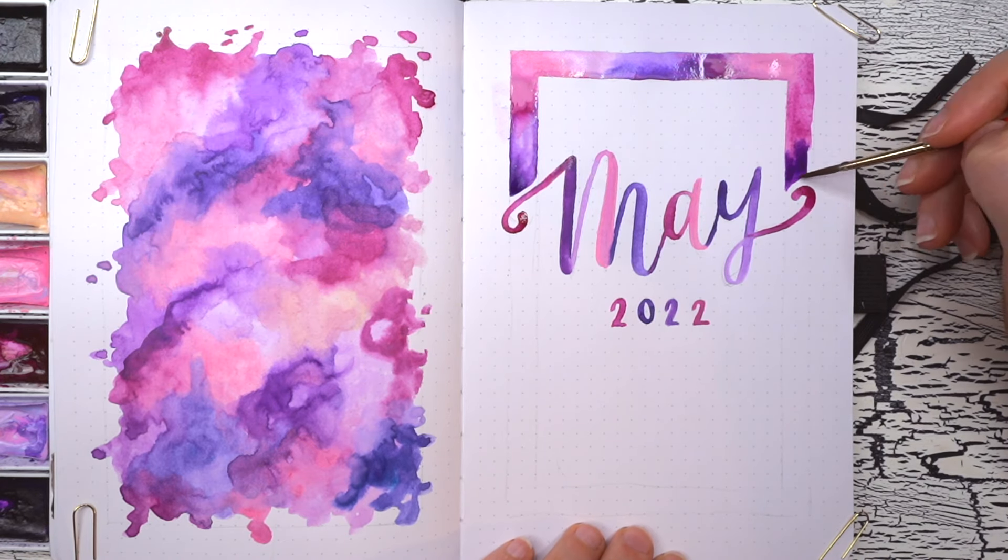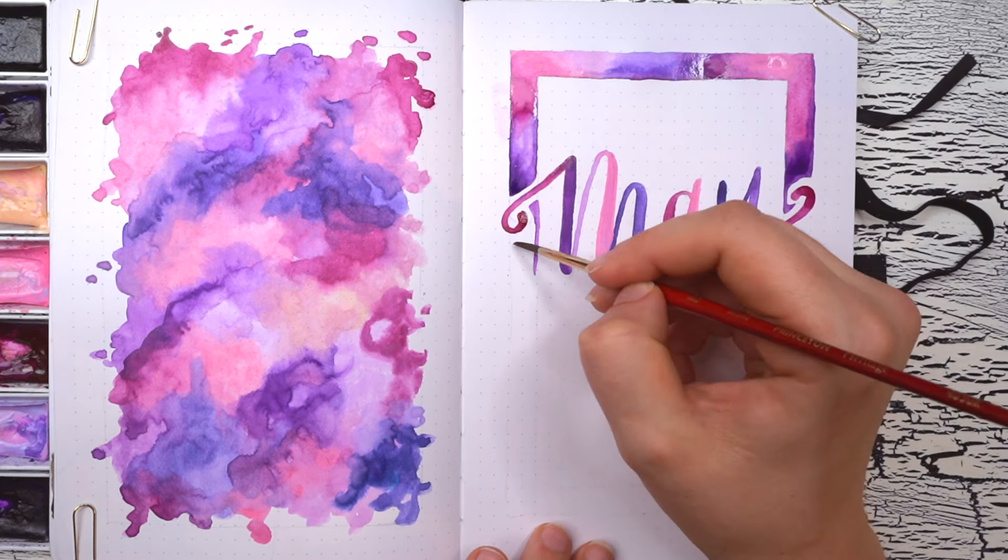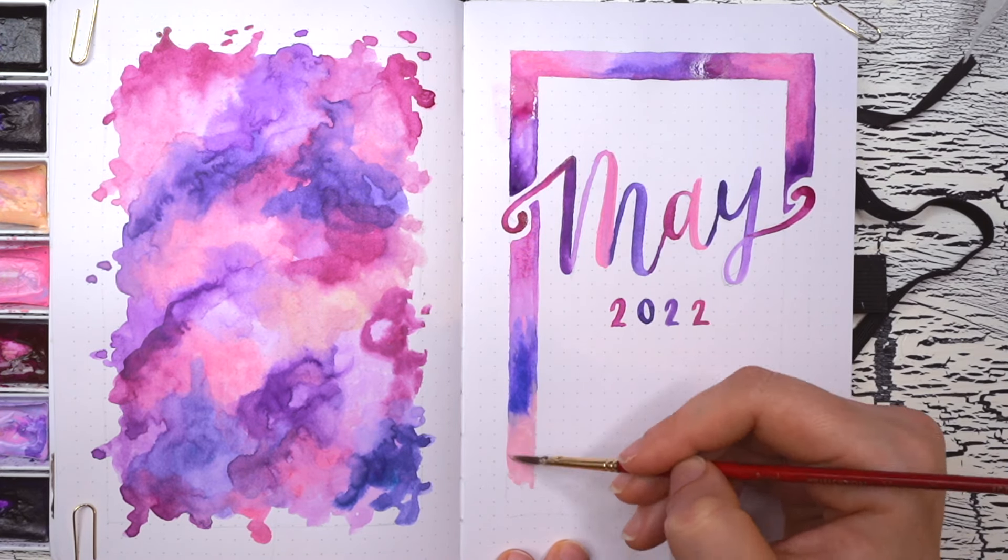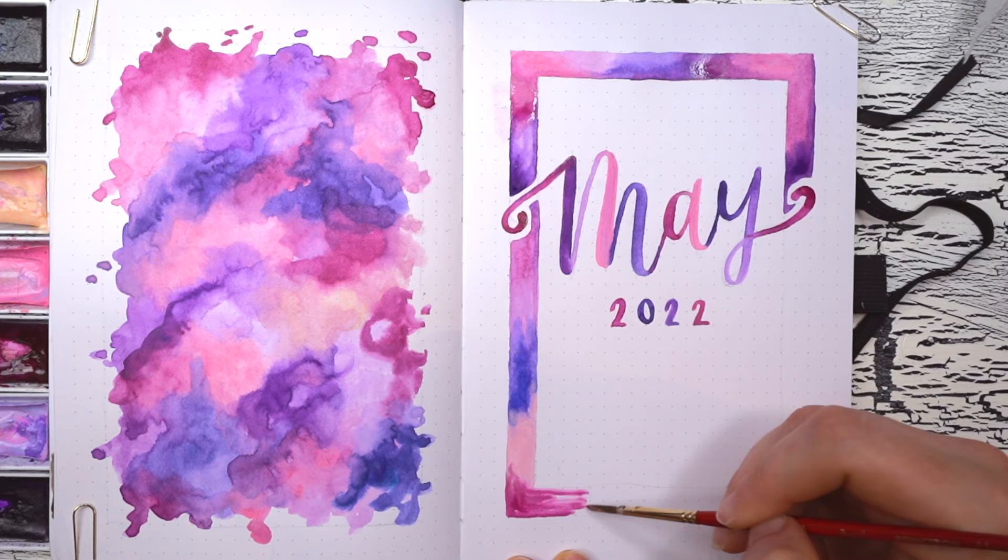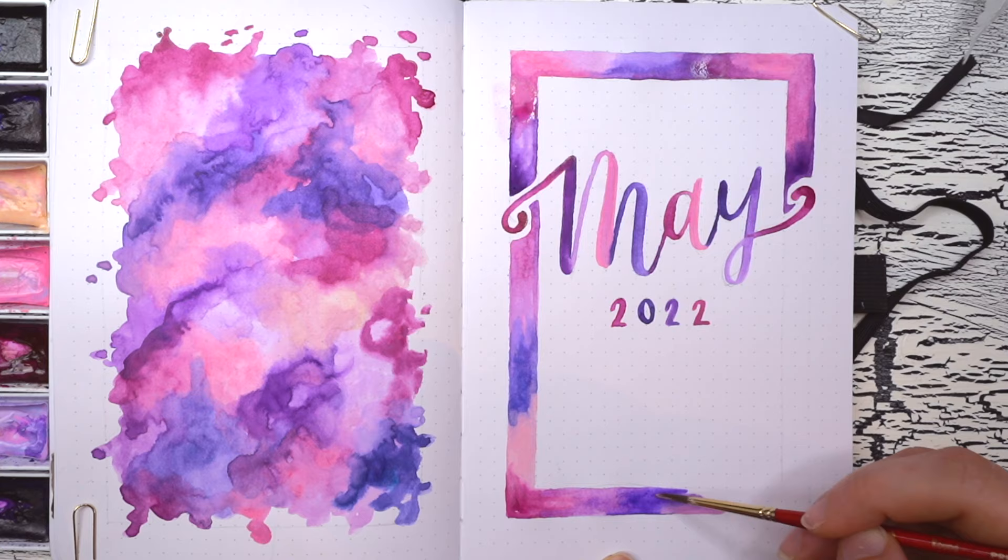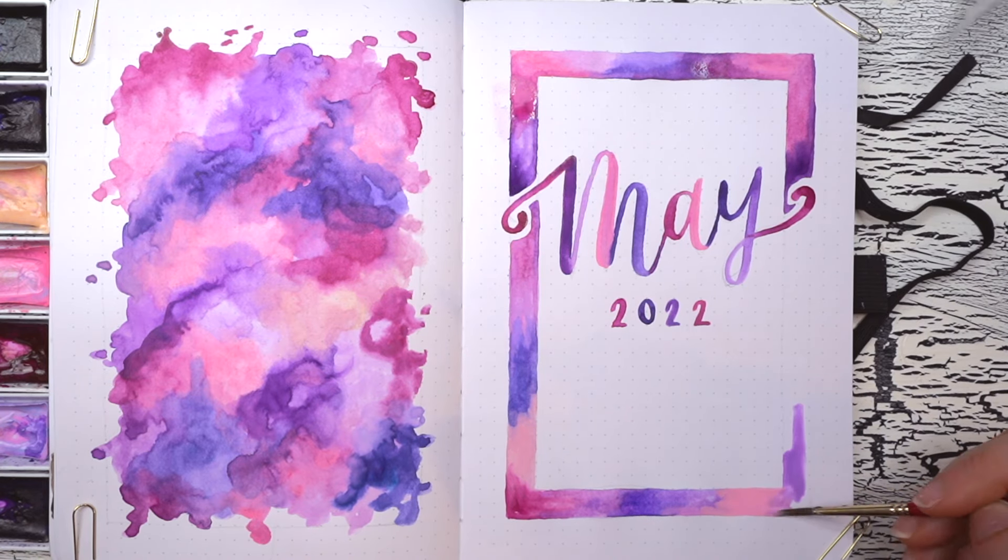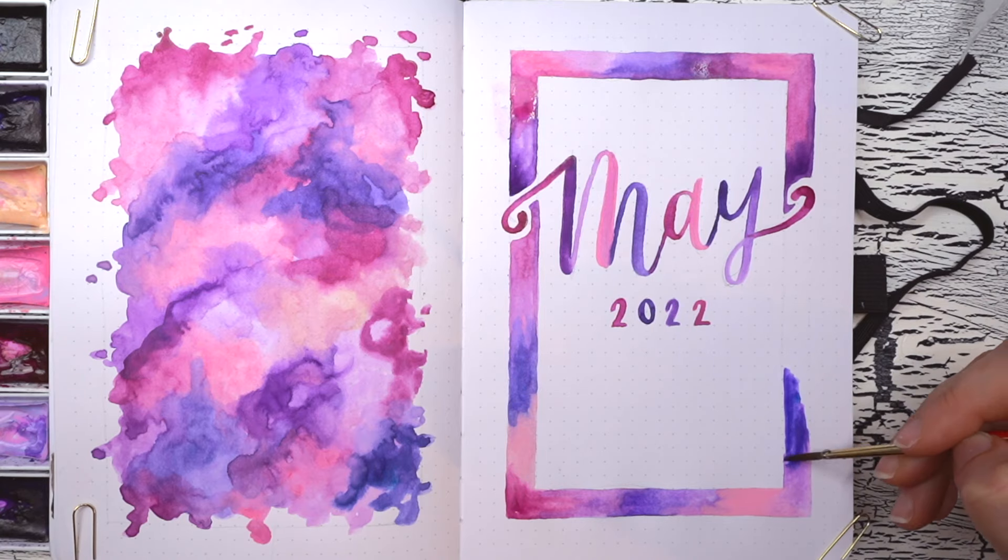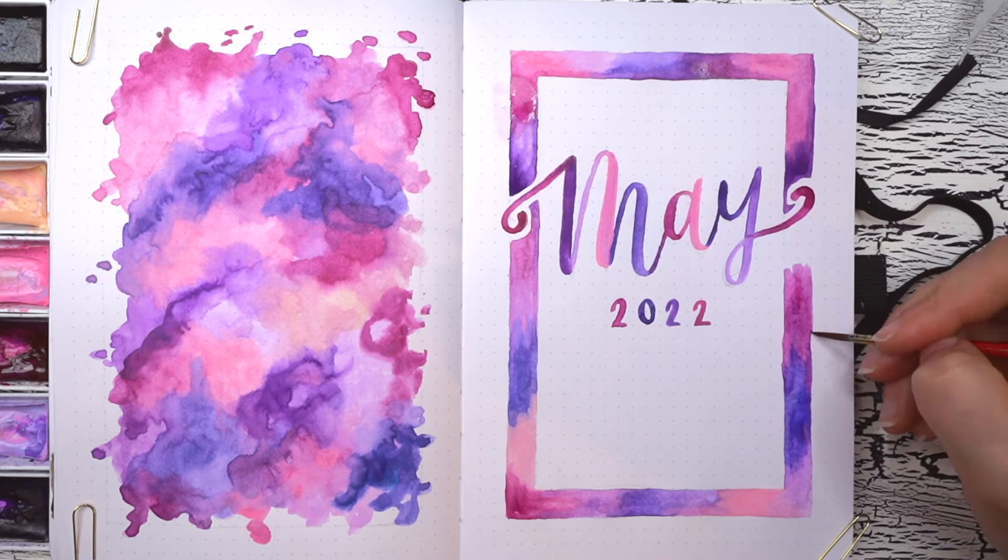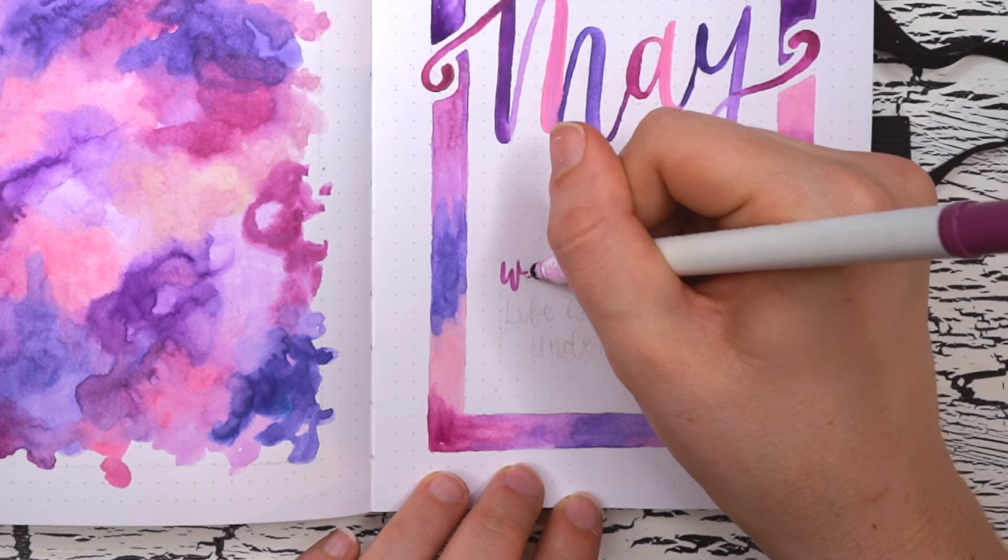So I'm starting off on this cover spread with all of the watercolor. I created a large watercolor splash on the left page and then on the right I painted in a May 2022 header along with a watercolor frame around that entire page. Creating watercolor pieces like this in my journal is always such an enjoyable and relaxing process for me.